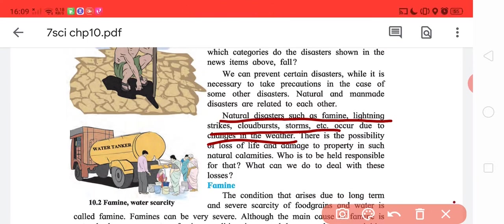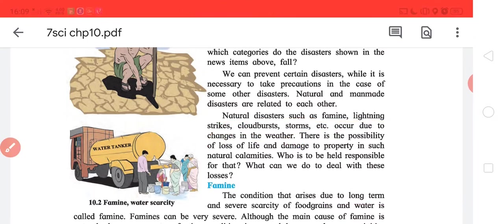There is a possibility of loss of life and damage to property in such natural calamities. Naturally, humans cannot control the weather. So natural disasters such as famine, lightning strikes, and other disasters will continue to happen.